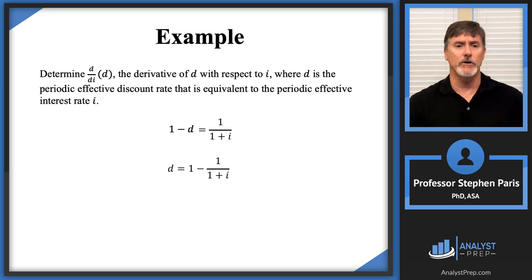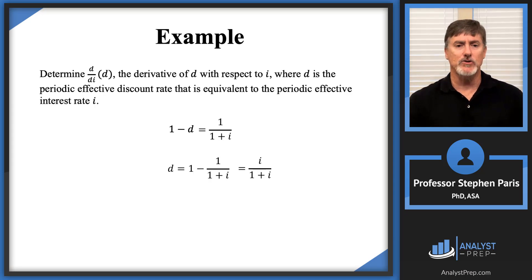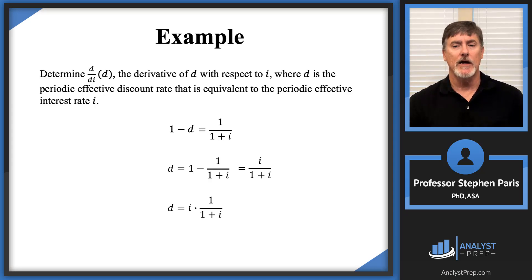We have D equal to one minus one over one plus I. Combining that into a one-term expression by getting a common denominator of one plus I, the numerator becomes one plus I minus one, so the ones cancel. When we add those two terms together, we get I over one plus I. Rewriting that as I times one over one plus I, and since one over one plus I is the periodic discount factor V, we get D equals I times V.